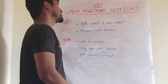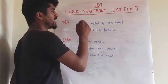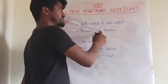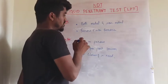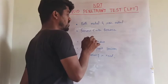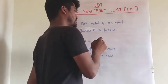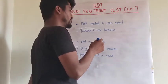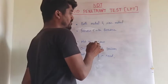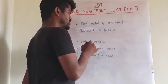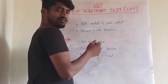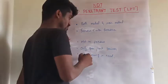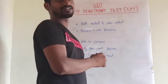The advantage of the liquid penetrant test is that this testing process can be carried out on both metal and non-metal, including ferrous and non-ferrous materials. The disadvantage is that this process cannot be carried out on porous metals and porous materials, because due to capillary action the defects cannot be found accurately. Also, it can only detect defects at the surface level, and post-cleaning is required, which takes more time.